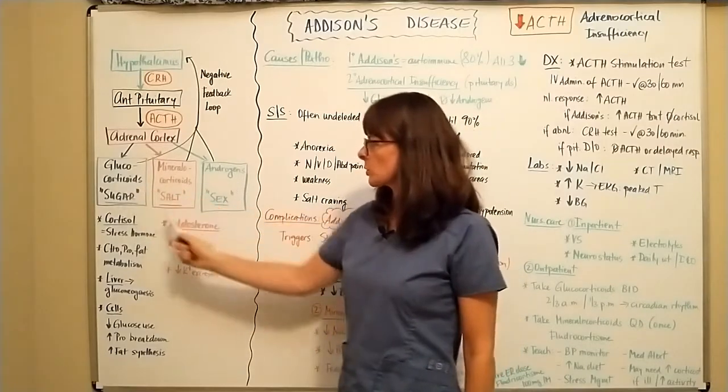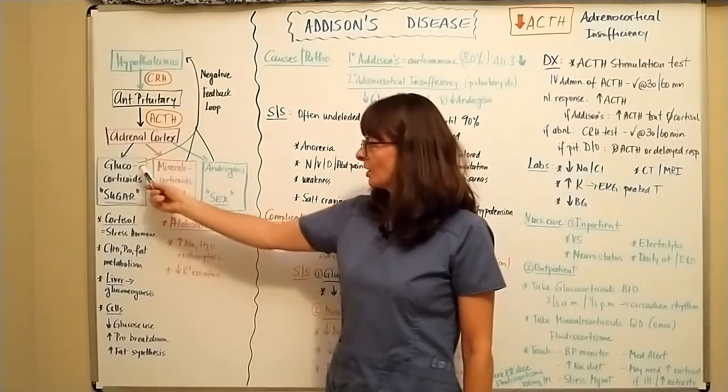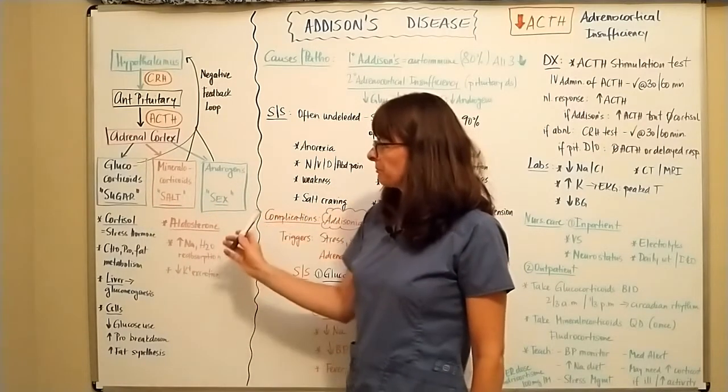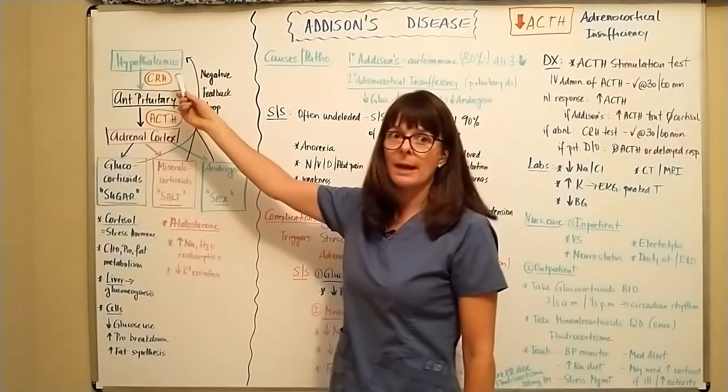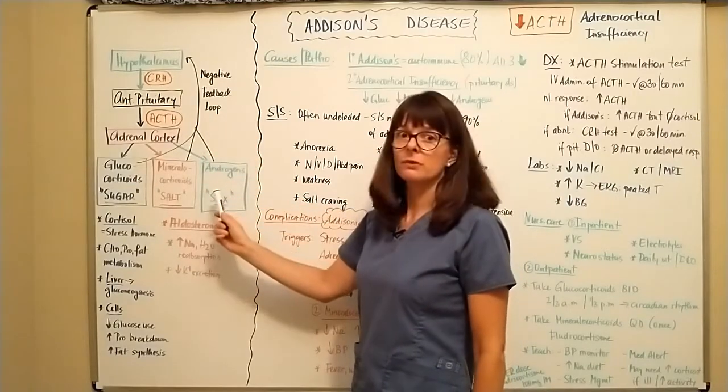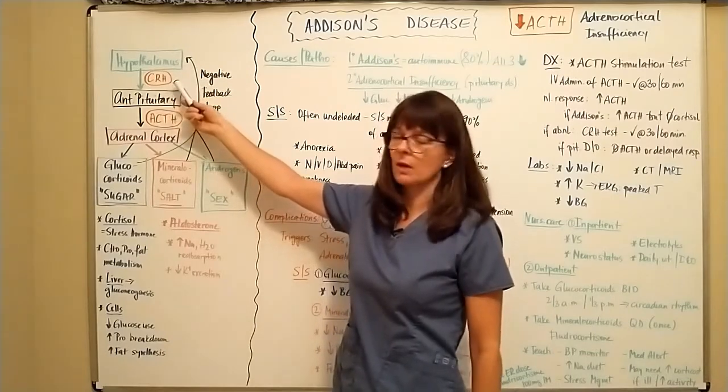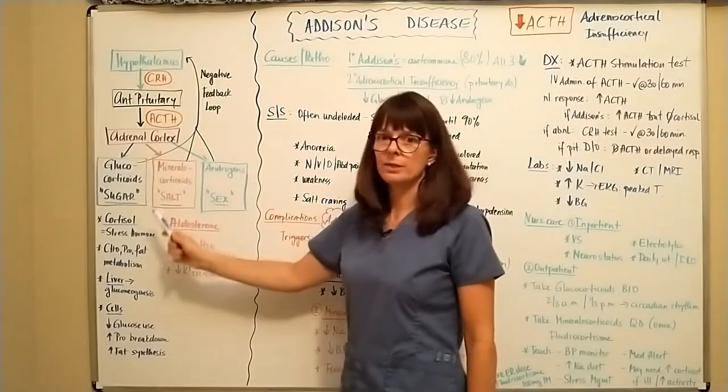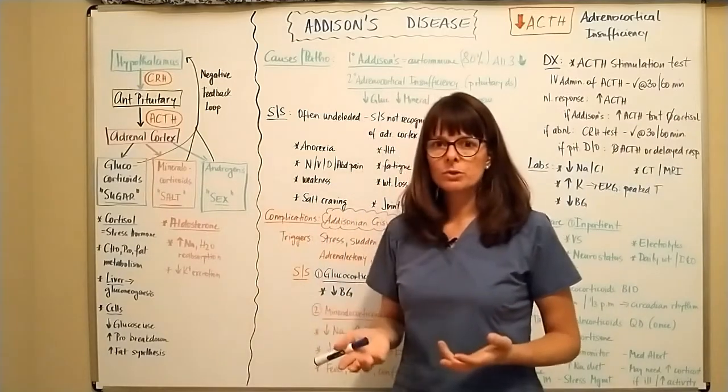And the easiest way to remember these three are the three S's: salt, sugar, and sex hormones, or mineralocorticoids, glucocorticoids, and androgens. And then in normal circumstances, the level of these will be reported back to the hypothalamus by this negative feedback loop. And if there were enough of these floating around, the hypothalamus will then stop or decrease secreting CRH, which will lead to decreased production of ACTH. And then the production in the bloodstream will go down for a nice balanced system.